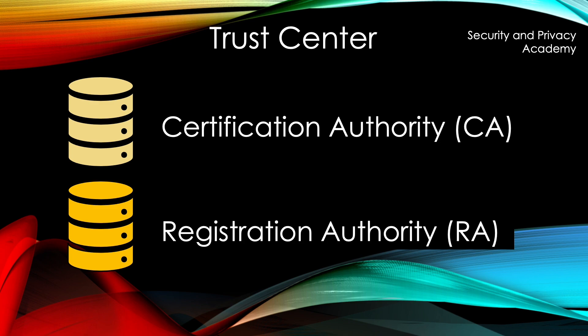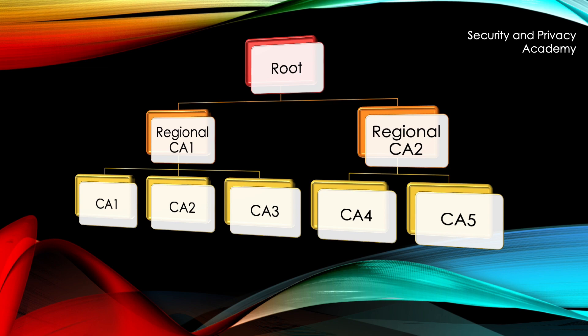The registration authority deals with identifying a person who wishes to obtain a certificate. In PKI, we have a hierarchical structure. At the bottom, you see a couple of certification authorities that are trusted to sign a certificate. So if you have a certificate, it might have been signed by one of these hypothetical certification authorities. We trust those certification authorities because we trust the regional certification authorities shown here in orange.